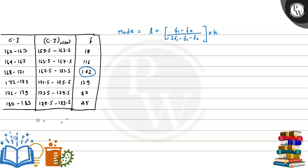According to this, the value of L is 167.5, the value of H is 4, F1 is equal to 142, F0 is equal to 116, and F2 is equal to 129.